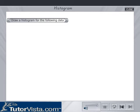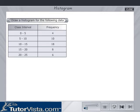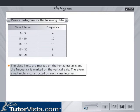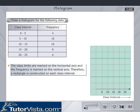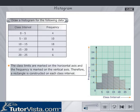Let us draw the histogram for the given data. The class limits are marked on the horizontal axis and the frequency is marked on the vertical axis. Therefore, a rectangle is constructed on each class interval.